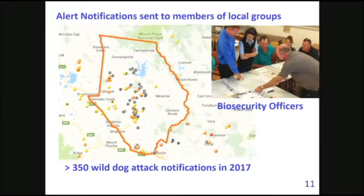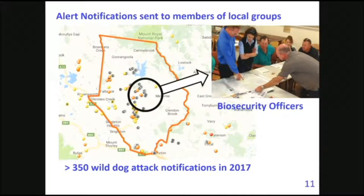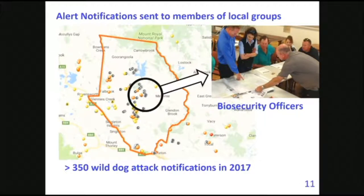Perhaps most importantly is the capacity of these sorts of tools to actually inform people on a broader scale. This is in the Hunter District of New South Wales, where wild dogs attack livestock and people are losing hundreds of sheep and lambs each year. Where those attacks are taking place, as soon as you record that data, it can ping off a message to a number of people, including biosecurity officers, who can help those landholders to react and deal with those issues.